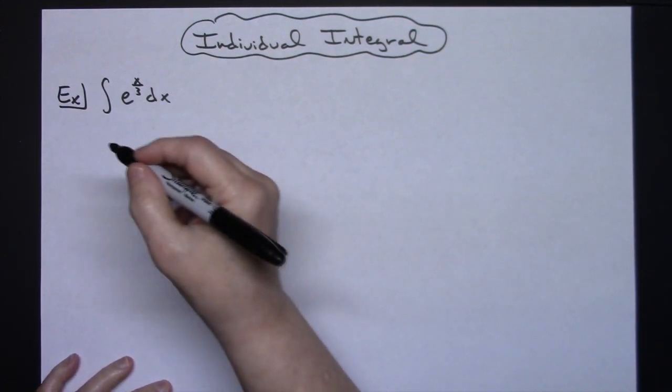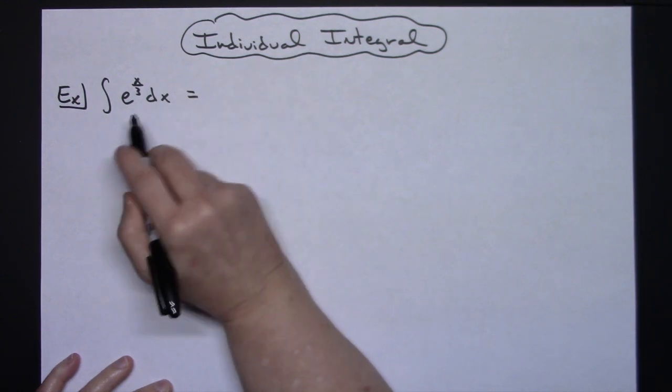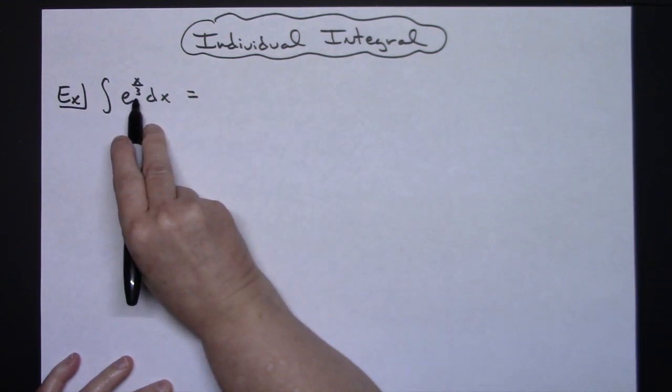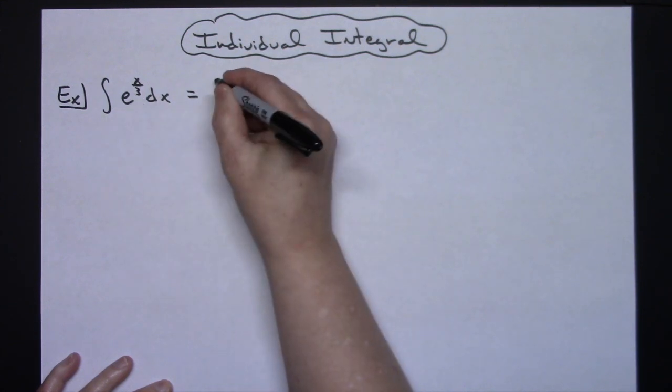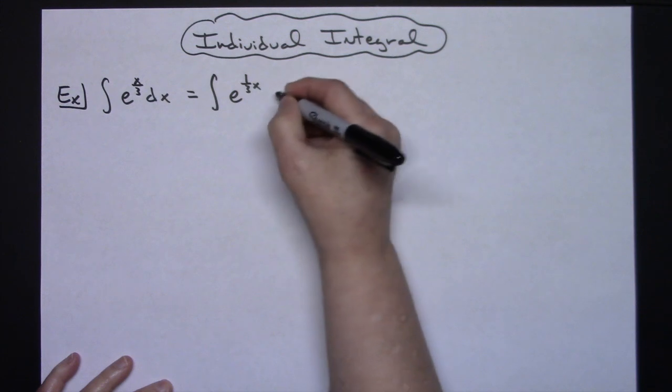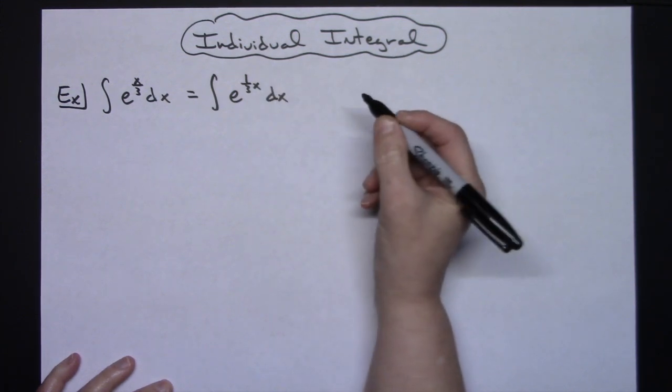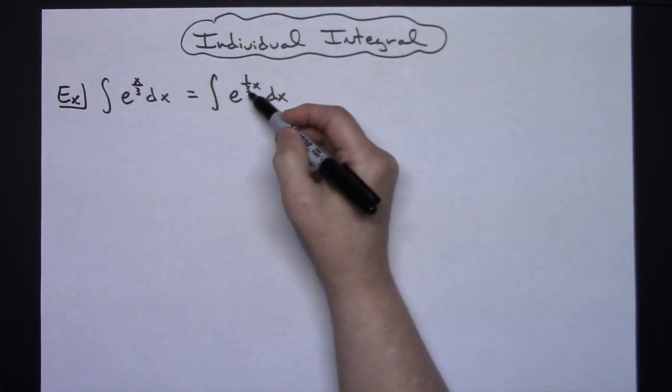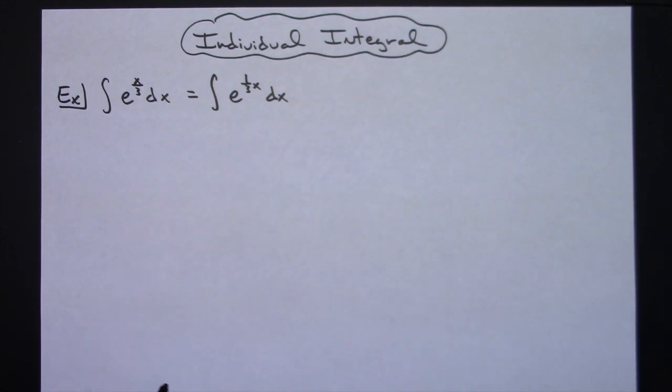For those beginning calc students, to see this a little bit easier, what I'm going to do is take this and rewrite it. I'm going to pull the one-third out so that just shows as a coefficient in front of that x. That sometimes will help beginning calc students to be able to take that derivative a little bit easier.